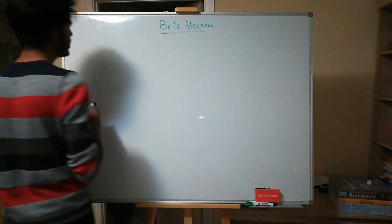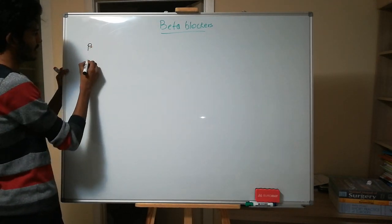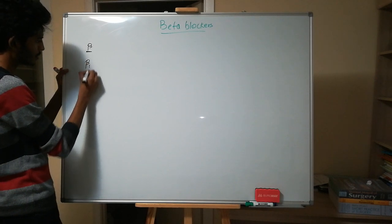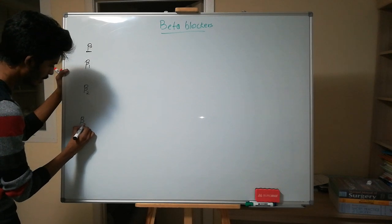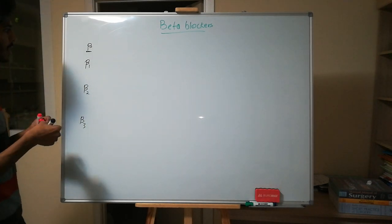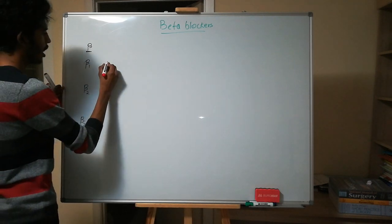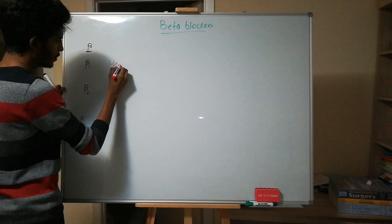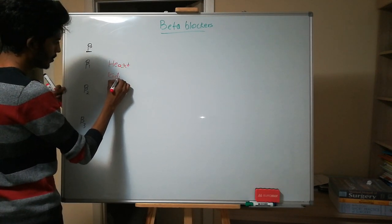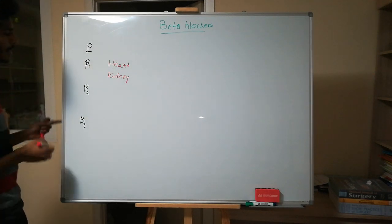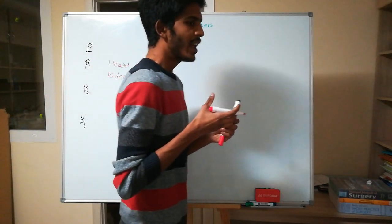Since we are talking about beta adrenoreceptors, let's see the types. Beta adrenoreceptors are classified into beta 1, beta 2, and beta 3. Now let's place the locations for each receptor. Beta 1 is located in the heart and also in the kidney.